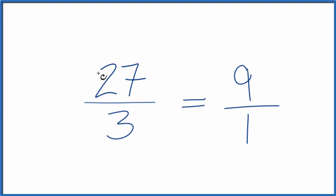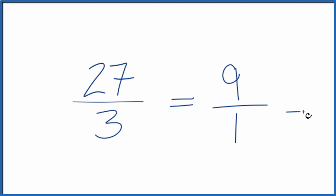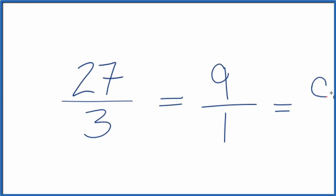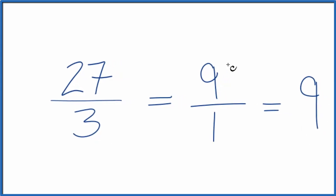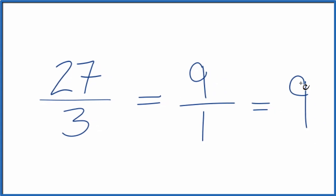That's because 3 goes into 27 nine times, and 3 goes into 3 one time. That's our greatest common factor. And 9 over 1, we divide 9 by 1, we get 9. So you could even simplify this further to the whole number 9.